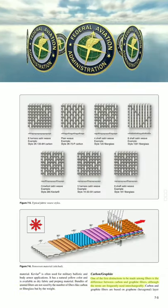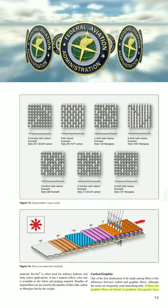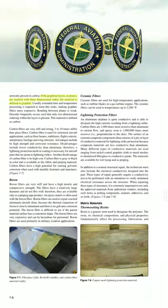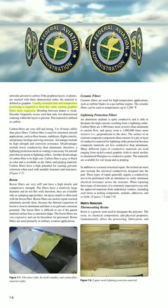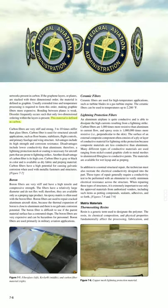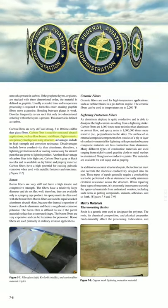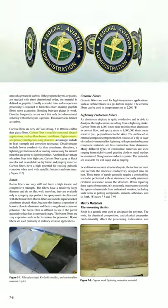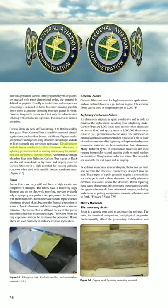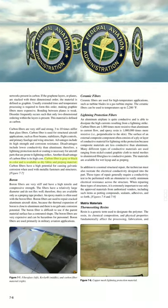Carbon/Graphite. Carbon and graphite fibers are based on graphene hexagonal layer networks. If the graphene layers or planes are stacked with three-dimensional order, the material is defined as graphite — requiring extended time and temperature processing, making graphite fibers more expensive. When only two-dimensional ordering within the layers is present, the material is defined as carbon. Carbon fibers are very stiff and strong — 3 to 10 times stiffer than glass fibers. Carbon fiber is used for structural aircraft applications such as floor beams, stabilizers, flight controls, and primary fuselage and wing structure. Advantages include high strength and corrosion resistance. Disadvantages include lower conductivity than aluminum, requiring lightning protection coatings, and high cost. Carbon fiber is gray or black and is available as dry fabric and prepreg.